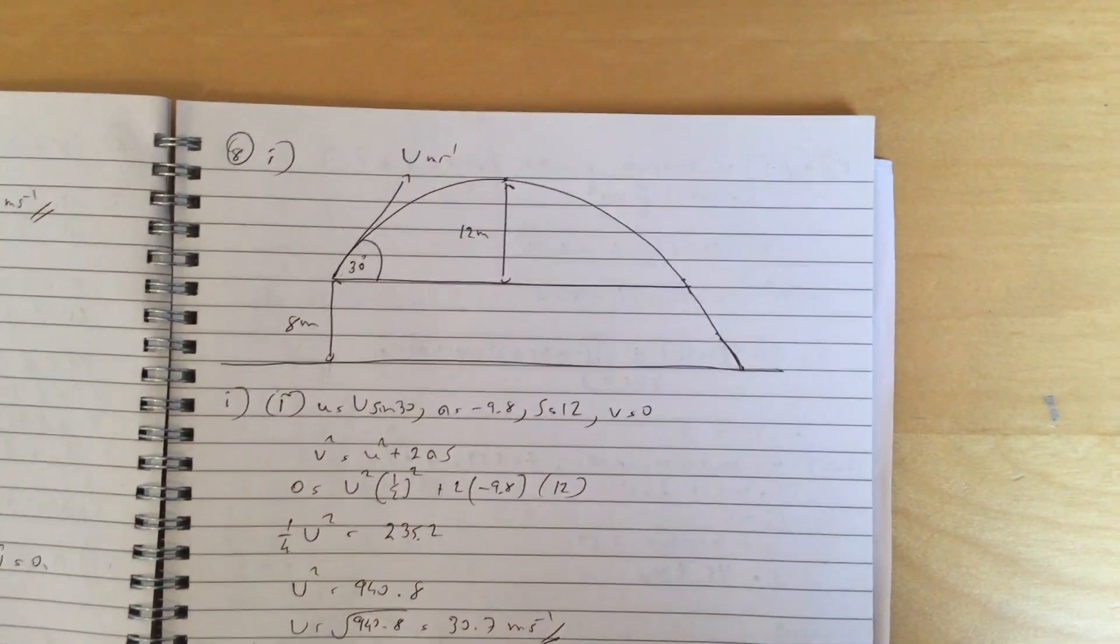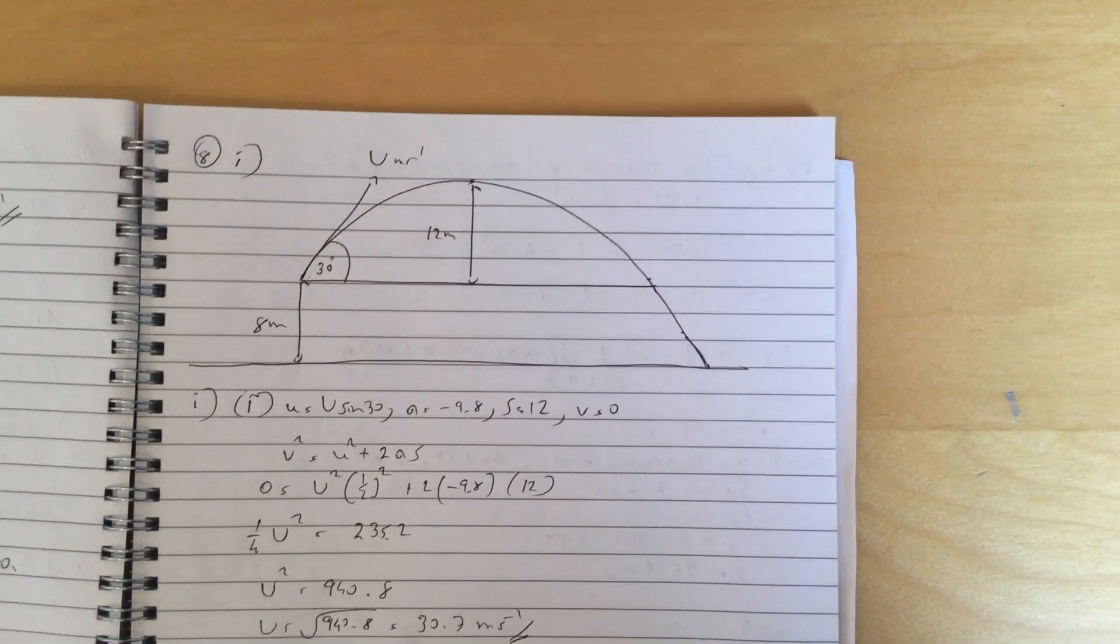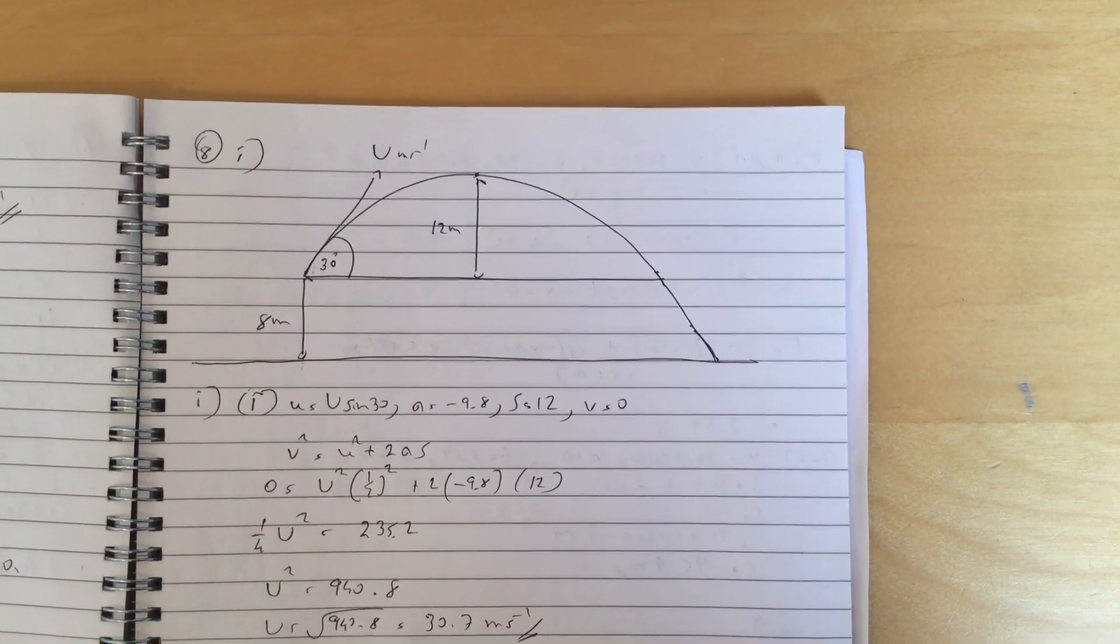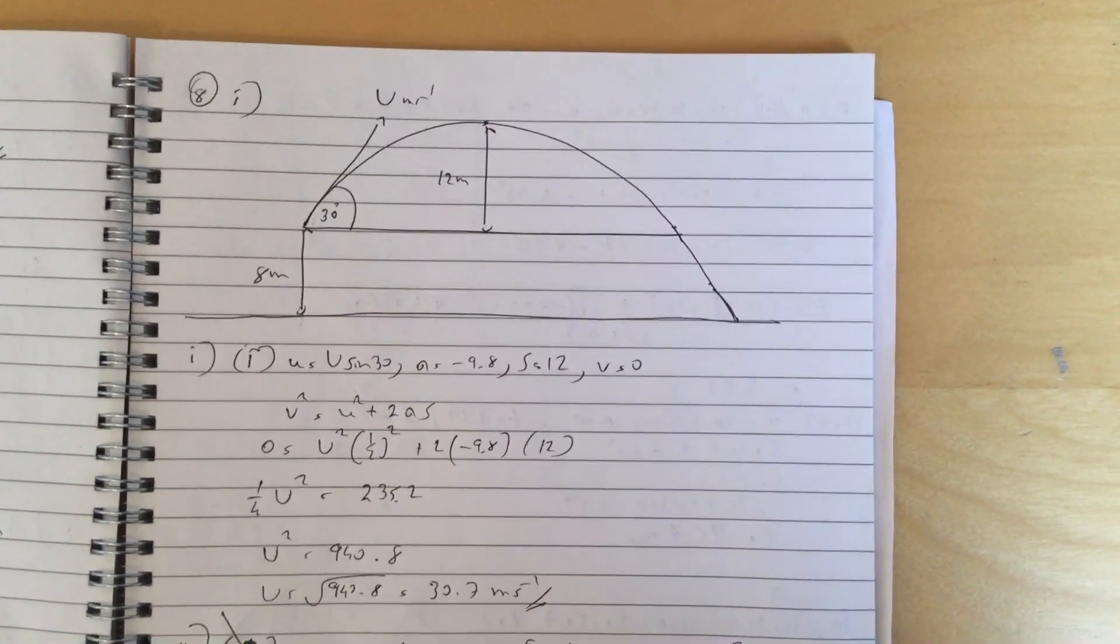Question 8 part 1, you resolve vertically and you put final velocity at 0, and you solve it for u, which is 30.7 meters per second.